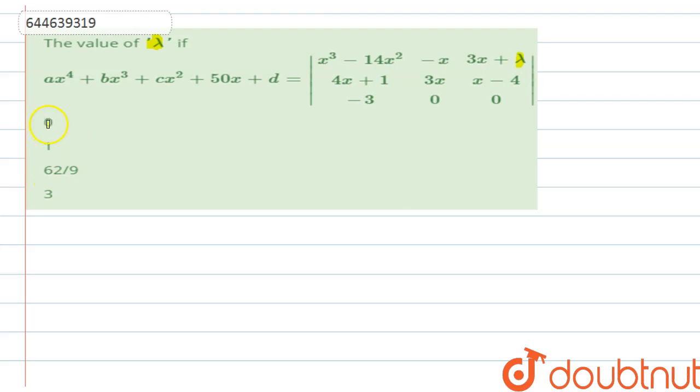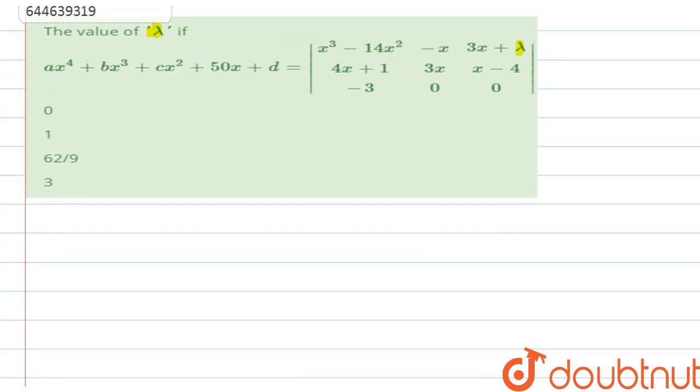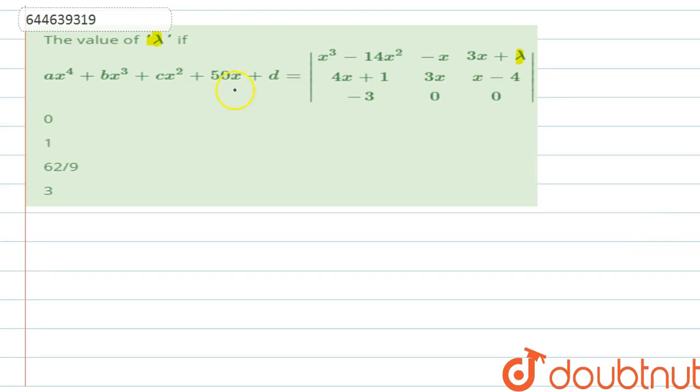There are four options given: 0, 1, 62 by 9, and 3. So let's solve this. First we will solve this determinant and then compare it to find the value of lambda.